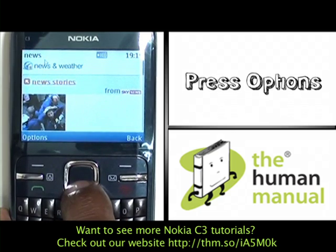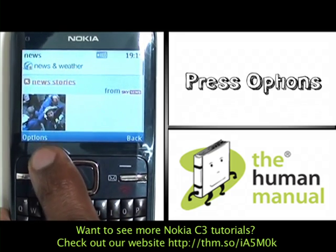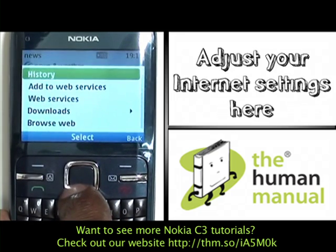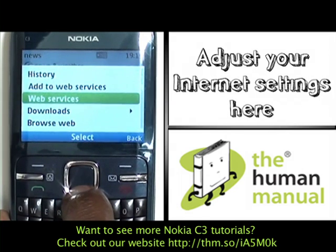Now press Options. From here you can adjust your Internet settings as well, things like clearing your cache and storing bookmarks.